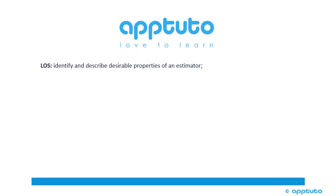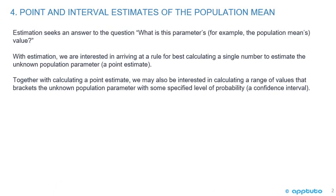This LOS is Identify and Describe Desirable Properties of an Estimator. Estimation seeks to answer the question: what is this parameter's value — for example, the population mean's value. With estimation, we are interested in arriving at a rule for best calculating a single number to estimate the unknown population parameter, a point estimate. Together with calculating a point estimate, we may also be interested in calculating a range of values that brackets the unknown population parameter with some specified level of probability — and that's a confidence interval.